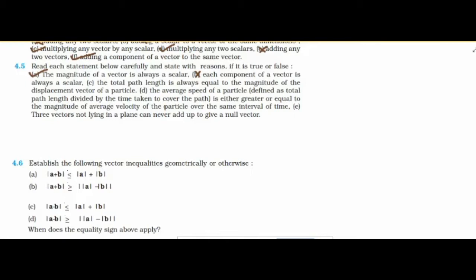The total path length is always equal to the magnitude of the displacement vector. Total path length means the distance traveled by the object. Distance equals displacement only in the case of straight-line motion; since the statement says 'always,' it is not correct — false.